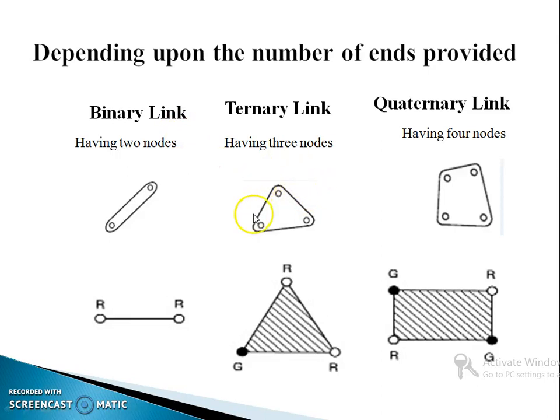Now, this is a ternary link here. Three nodes are there. We can attach three different links to this single link. And this is a quaternary link where four nodes are there. And we can attach four different links to this single link. And this is one way of expressing these links, representing these links.